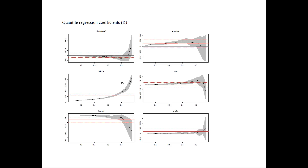The graph values correspond directly to the numbers in the regression table. If your software doesn't automatically produce these plots, you can create them in Excel or any other software using the quantile regression coefficients estimated at every fifth or tenth quantile, then plot the confidence intervals around them along with the OLS coefficient and its confidence interval.